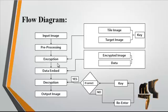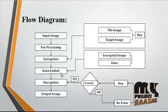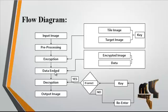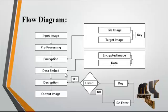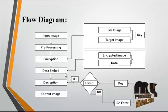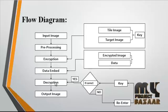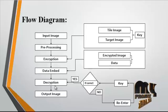The encrypted image then undergoes the process of data hiding. Data embedding means embedding data into the encrypted image. After embedding, the encrypted image consists of two embedded images and one embedded data.